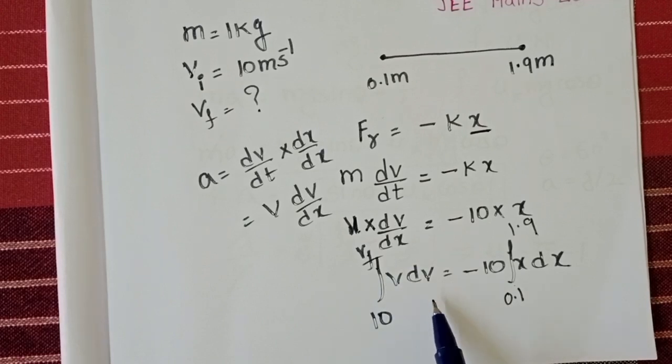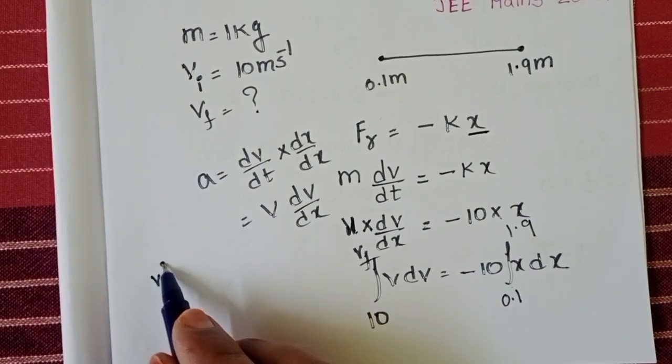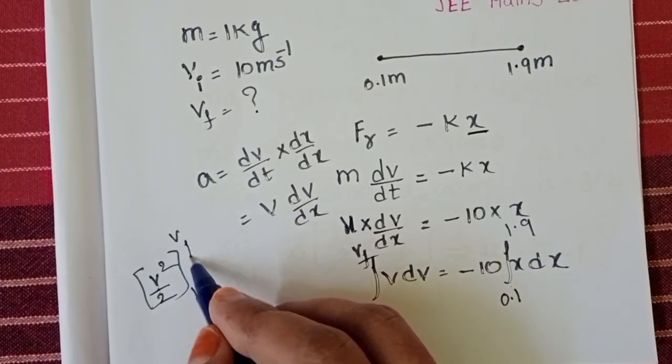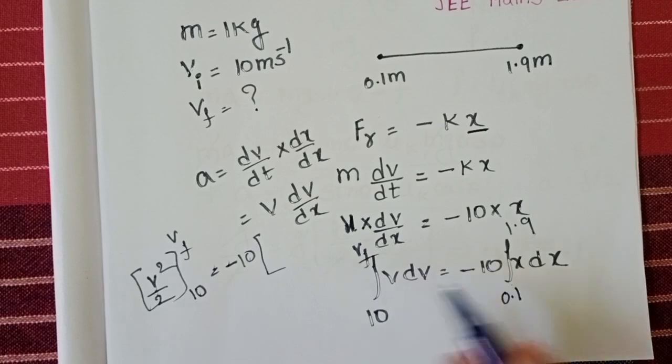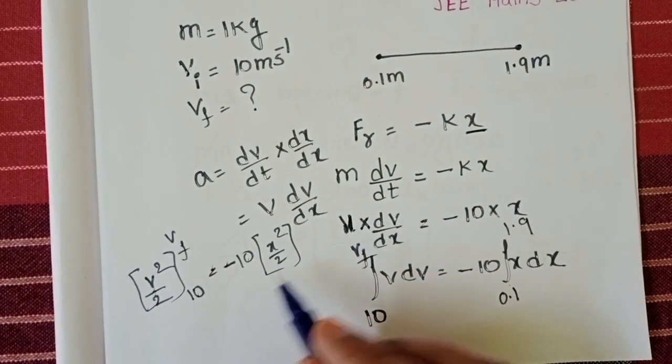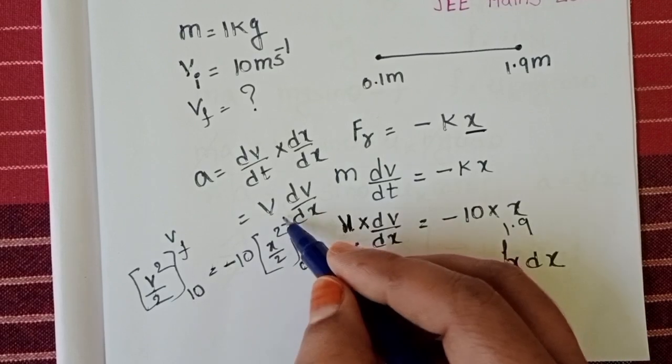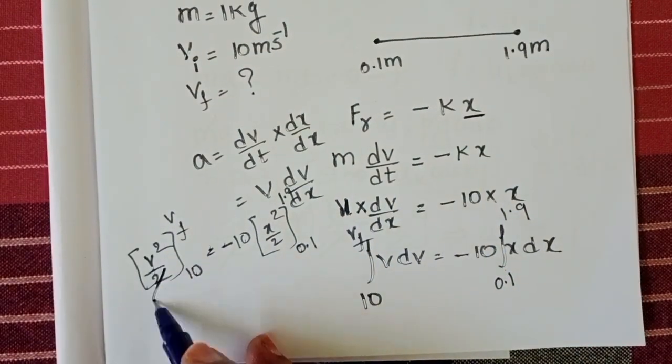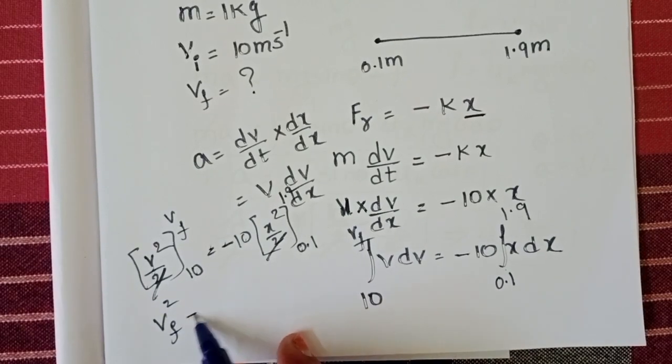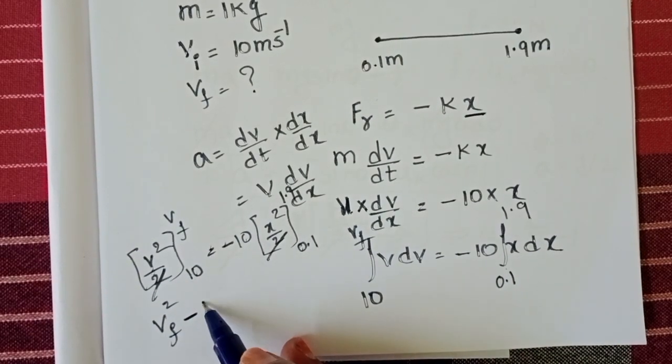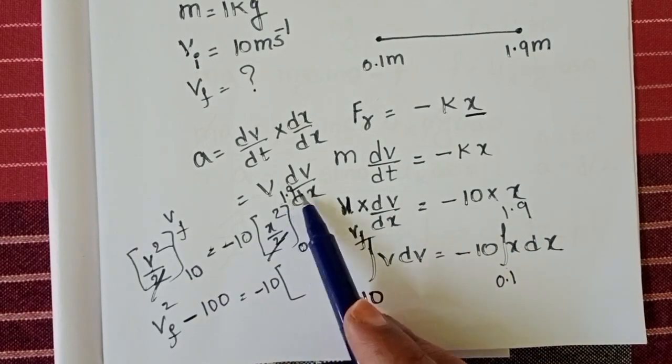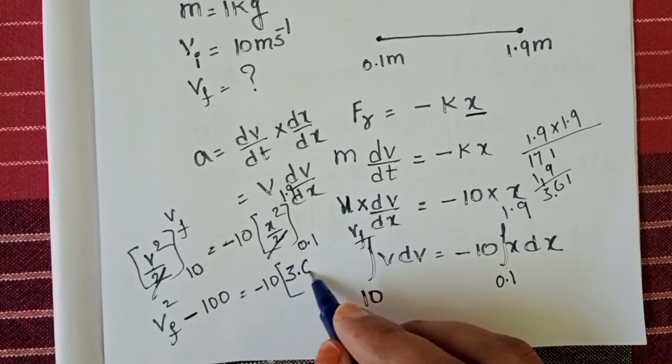Integral v dv equals v square by 2, and limits from 10 to final velocity. Minus 10 into integral x dx equals x square by 2, and limits from 0.1 to 1.9. On both sides 2 get cancelled. Final velocity vf square minus lower limit is 10. 10 whole square becomes 100. Minus 10 into upper limit 1.9, which is 3.61.